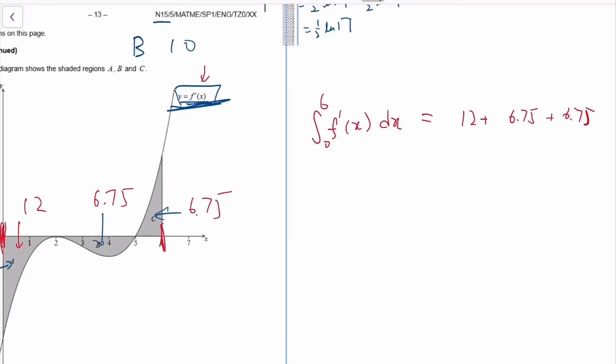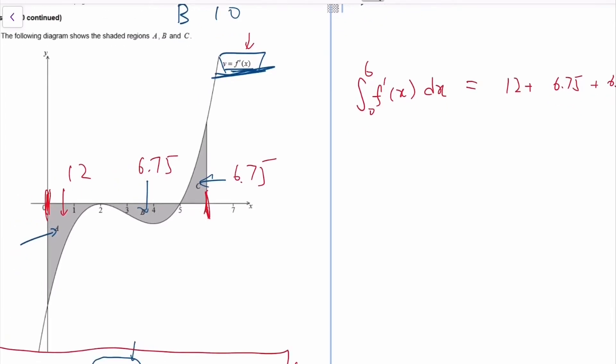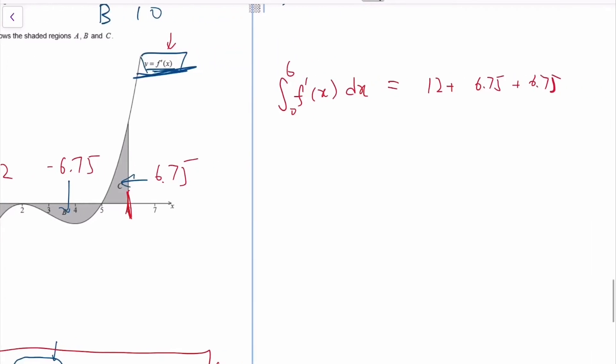Well, the answer is no, because as I explained, there's a thing about integration. If your area is below the x-axis, integration would think that the area is negative. So in perspective of integration, they would think this area is negative 12, this area is negative 6.75, and C would be positive 6.75. So if you integrate from 0 to 6, you should get negative 12, negative 6.75, and then add 6.75.